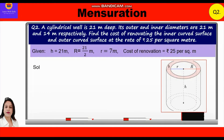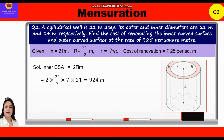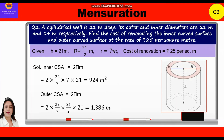Inner curved surface area = 2πrh = 2 × (22/7) × 7 × 21 = 924 meter square. Outer curved surface area = 2πRh = 2 × (22/7) × (21/2) × 21 = 1386 meter square.